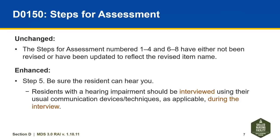Looking at the steps for assessment for the resident mood interview, Steps 1-4 and 6-8 have either not been changed or have been updated to reflect the revised item name. Step 5 was revised to clarify how to approach the assessment for residents who may have a hearing impairment. It now states: residents with a hearing impairment should be interviewed using their usual communication devices and techniques as applicable during the interview.